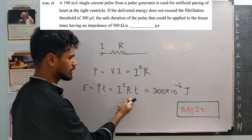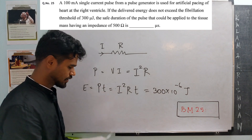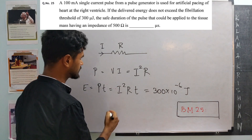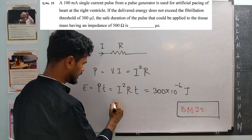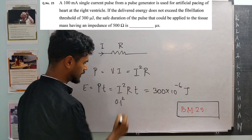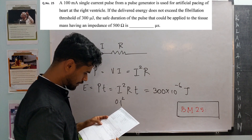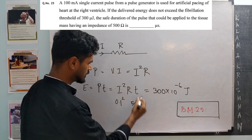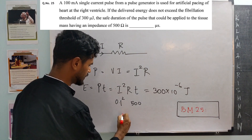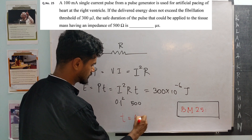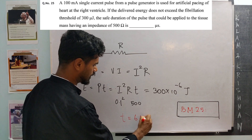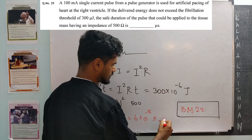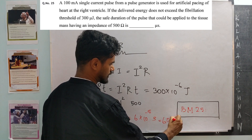At maximum, T is limited by this constraint. Plugging in: I is 100 milliamps, so I² is (0.1)², and R is 500 ohms. Solving for T gives 6×10⁻⁵ seconds, which is 60 microseconds.